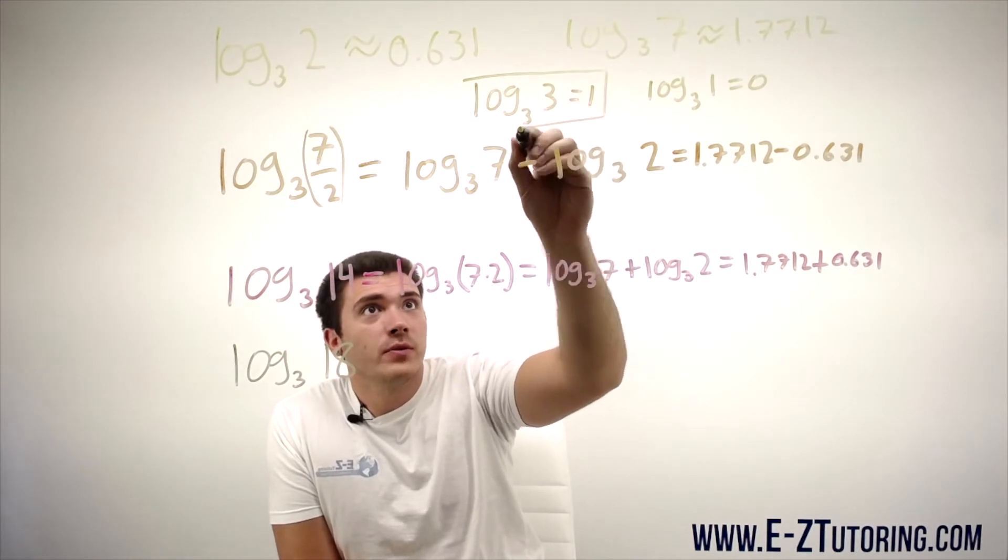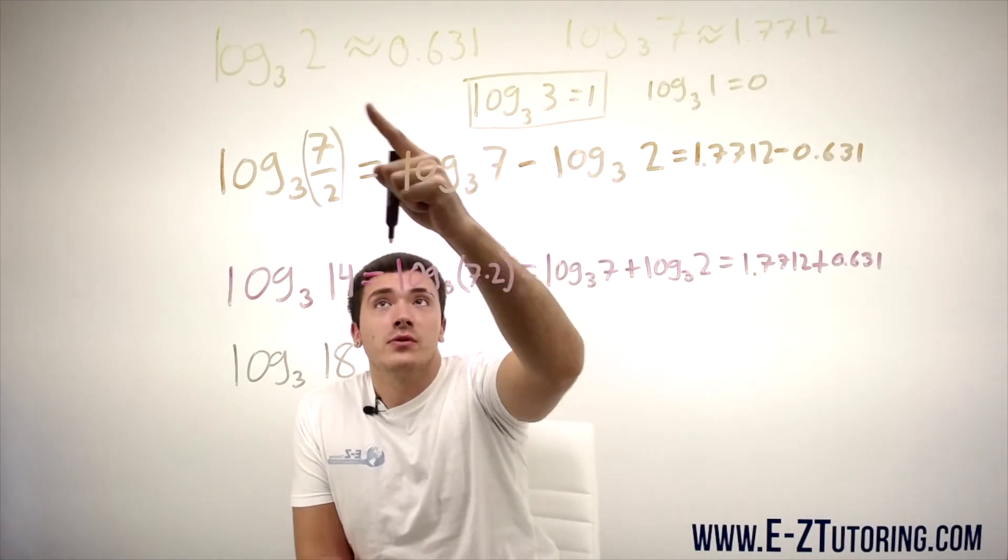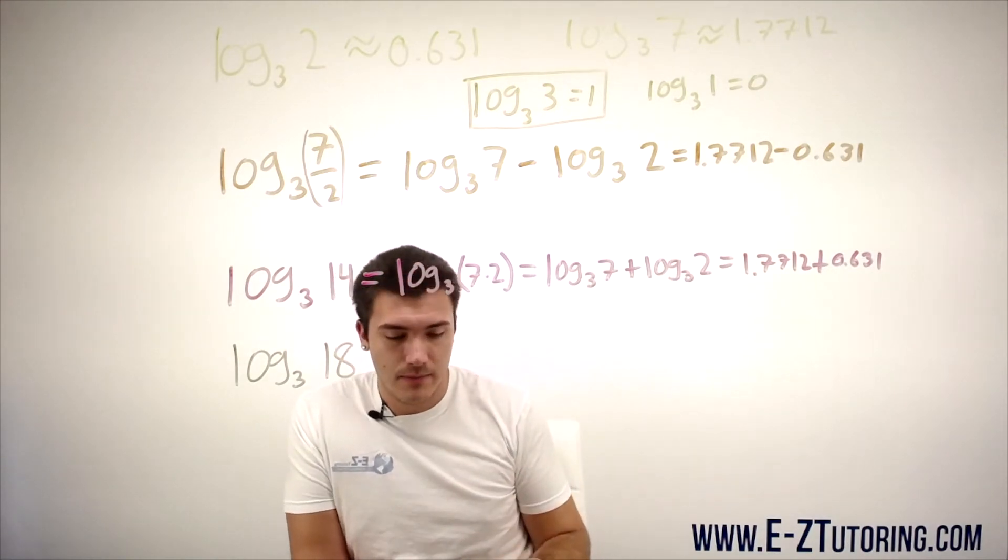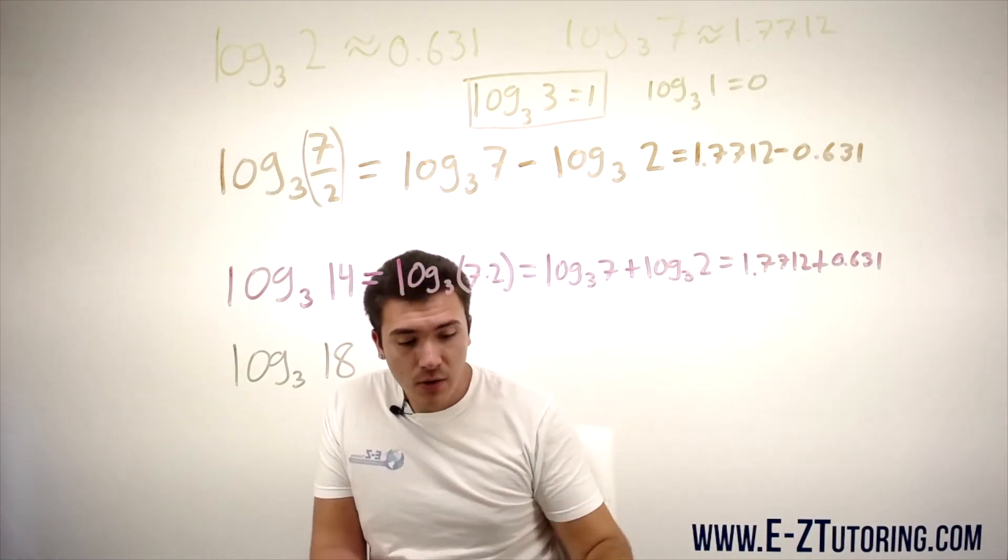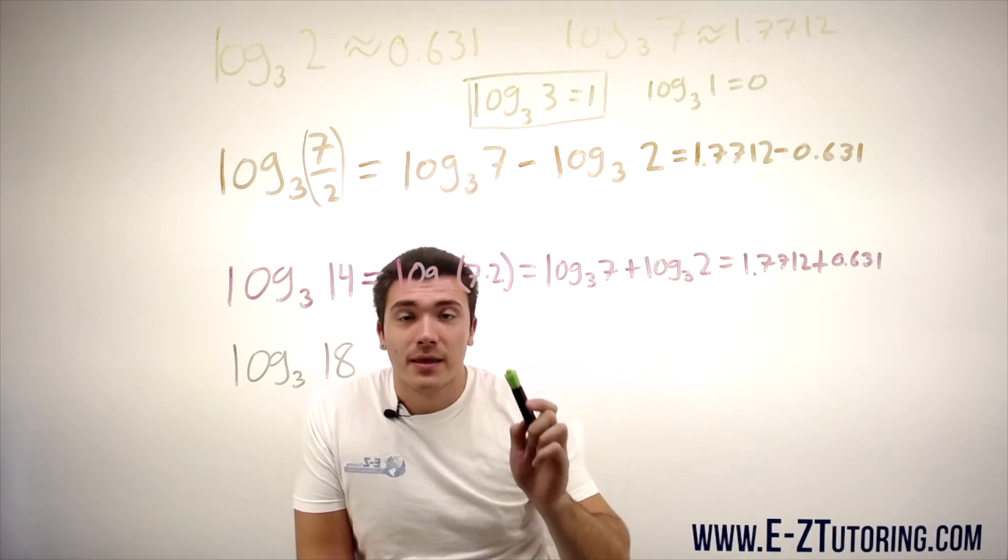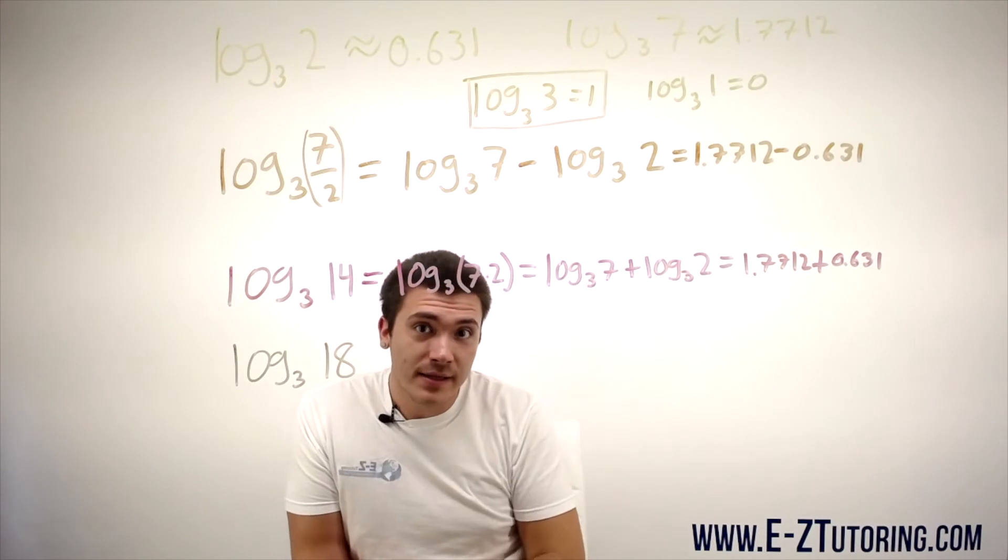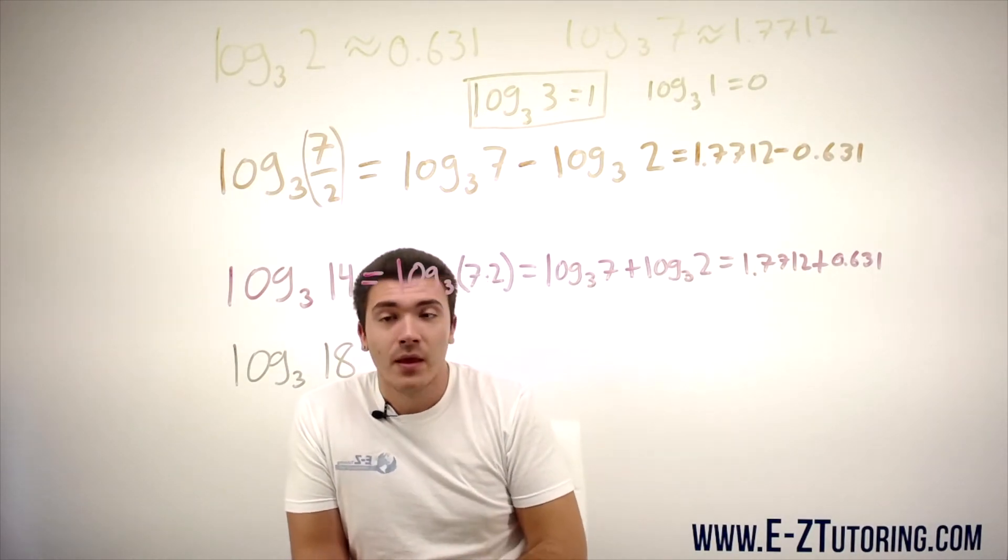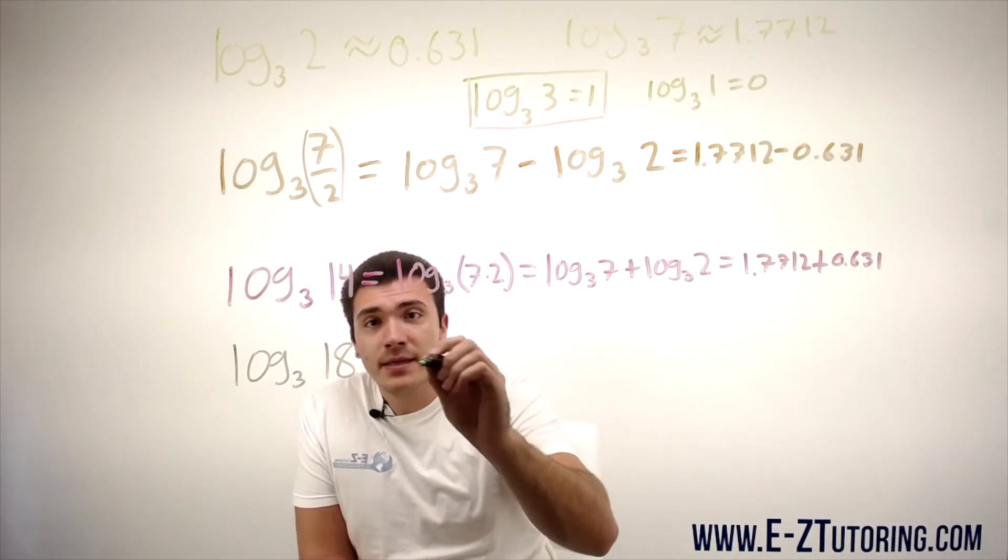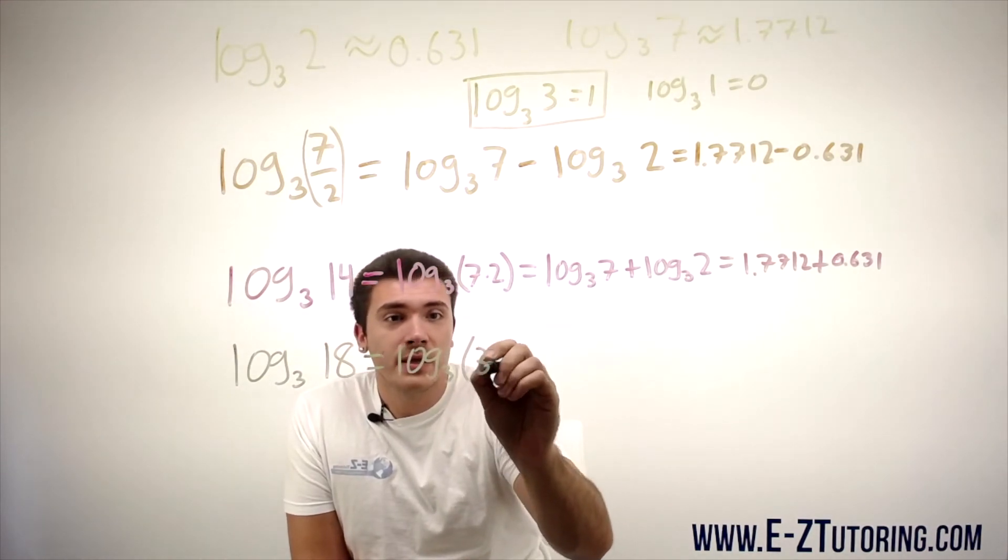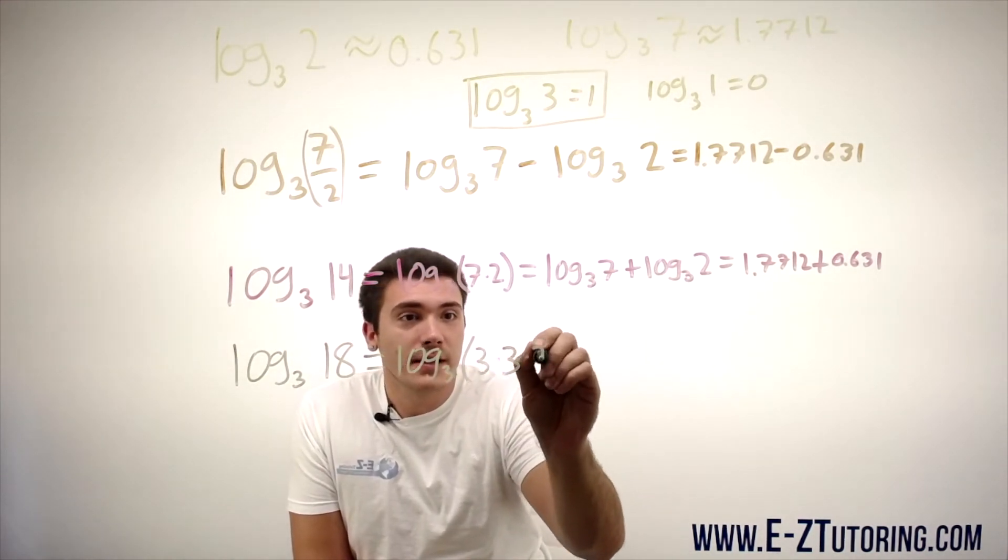So since we know this, not only can we use 2 and 7, but now we can also use 3. So if we know that now we can use 3, can we combine 2, 3, and or 7 to get 18? Well, 18 is equal to 3 times 3 times 2.